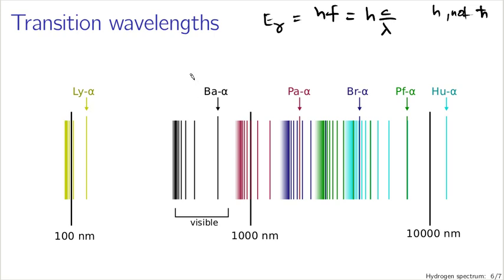Likewise for the Balmer lines: 3→2, 4→2, 5→2, 6→2, 7→2, up to infinity→2. The same applies for the Paschen, Brackett, Pfund, and Humphrey series. They all have these nice patterns, they all overlap, and if what you're looking at is the visible spectrum of hydrogen, you're looking at the Balmer lines.